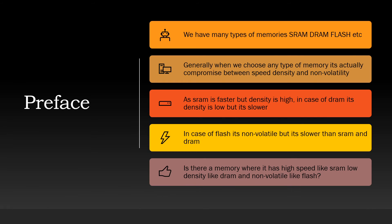When we select any type of RAM, we have SRAMs, DRAMs, Flash, etc. While we select, we compromise on something. If we want faster memory, we go for SRAMs. If we want lower density, we go for DRAMs. And if we want non-volatility, we go for Flash. But is there a way where we could have all of these three things in just one memory?